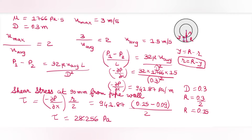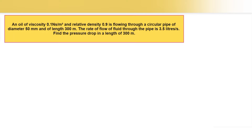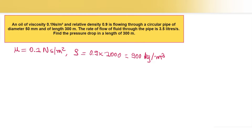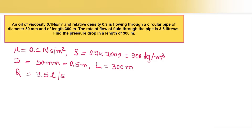The second question: an oil of viscosity mu = 0.1 Newton second per meter square, relative density 0.9, so density = 900 kg/m³, diameter = 50 mm = 0.05 m, length = 300 m, and flow rate = 3.5 liters per second = 0.0035 m³/s.